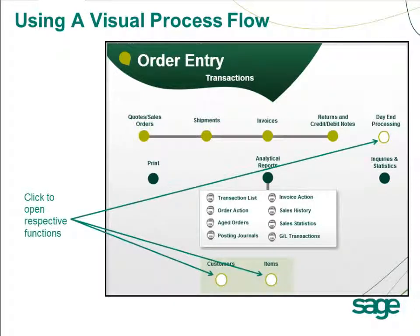There are also white circles outlined in green. These icons include day-end processing, customers, and items. These icons are not normally found in Order Entry — they are normally found in Inventory Control and Customers. But if you were to click on, for example, day-end processing or items, the appropriate functions in Inventory Control will appear. If you were to click on Customers, it will bring up the Customers interface.